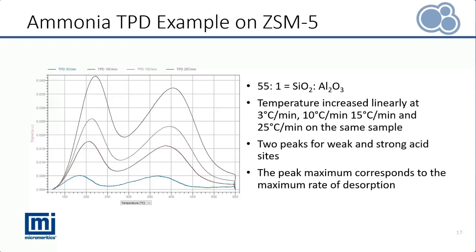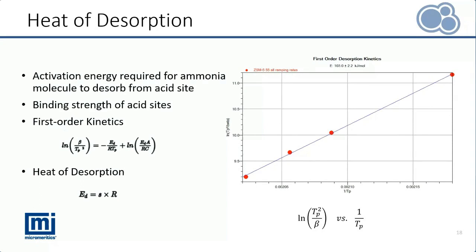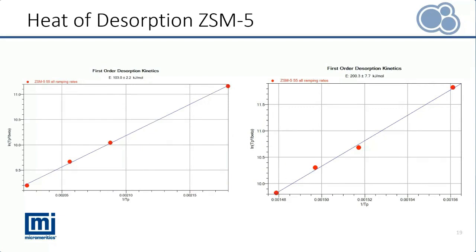As mentioned previously, we can calculate the heat of desorption using the first order kinetics. The heat of desorption means the activation energy required for the ammonia molecule to desorb from an acid site — in other words, it represents the binding strength of the site. We can get a linear graph by plotting the natural log of maximum peak temperature squared divided by beta, the ramping rate, against 1 over the maximum peak temperature. By multiplying the slope and the gas constant, the heat of desorption of an acid site is calculated. Here are two first order kinetics plots for the weak acid site on the left and the strong acid site on the right. The heat of desorption for the strong acid site is around 200 kJ/mol, twice as large as the weak site, which is at around 100 kJ/mol.